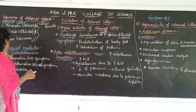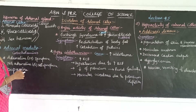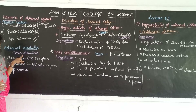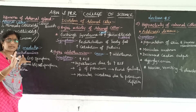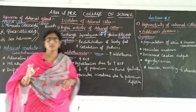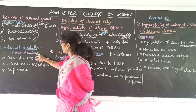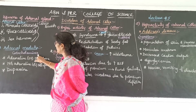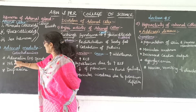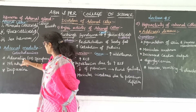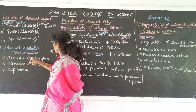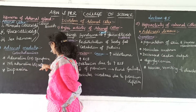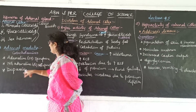Now we switch to adrenal medullary hormones. The adrenal medullary hormones are called catecholamines. The important catecholamines are adrenaline (epinephrine), noradrenaline (norepinephrine), and dopamine.